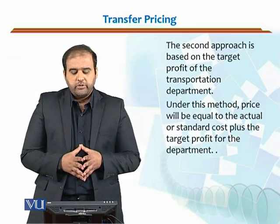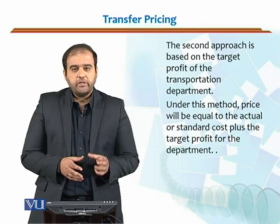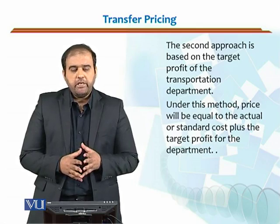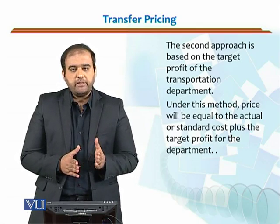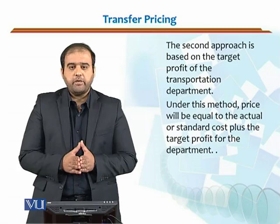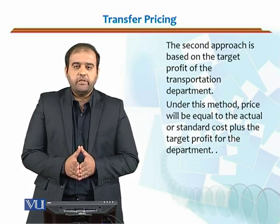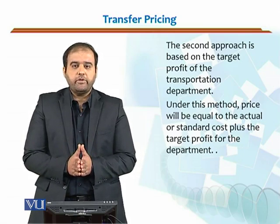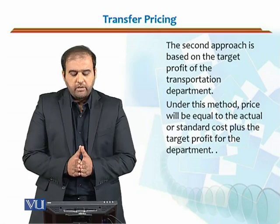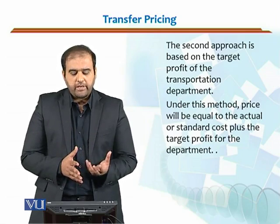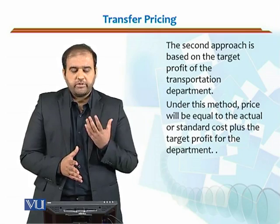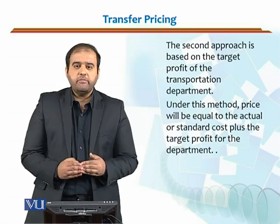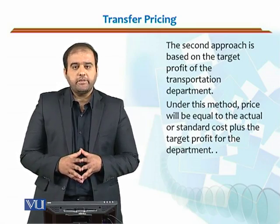The second approach is based on the target profit of the transportation department or company. Under this method, price will be equal to the actual or standard cost plus the target profit for the department. This is like some internal mechanism in which you will be looking at the market price and adding some targeted profit onto it. So this would be your actual or standard cost plus the profit added onto it. It might become higher than the market price, or it might still be lower than the market price as well.